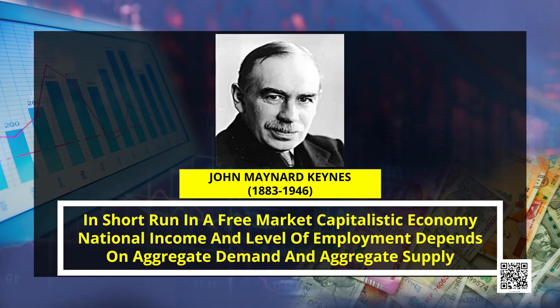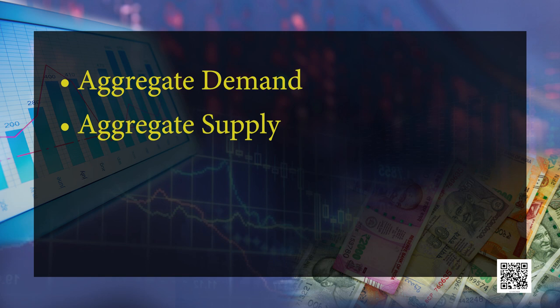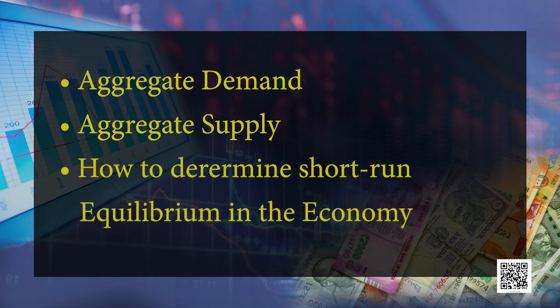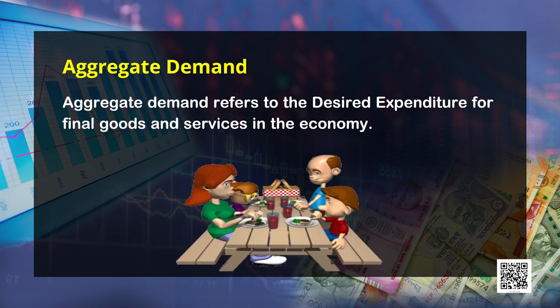It was the most prominent economist John Maynard Keynes who introduced us to this chapter. The basic problem revolving around macroeconomics is the determination of income and employment, which is the title of this chapter. Under this chapter we'll be studying about aggregate demand, aggregate supply, and how to determine the short-run equilibrium in the economy.